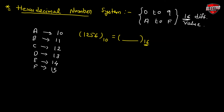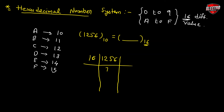Write the given number and divide by 16. If I divide 1256 by 16, I get 78 with a remainder of 8. Then dividing 78 by 16 again, I get 4 with a remainder of 14.